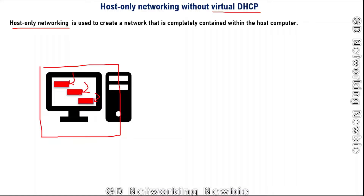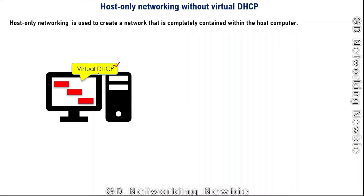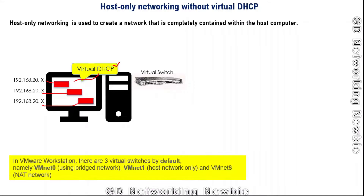We can have multiple virtual machines as part of a host-only network. These virtual machines can be assigned IP addresses using a virtual DHCP, which will dynamically assign IP addresses to all those virtual machines. In VMware, a virtual switch is used to connect all these virtual machines. By default in VMware Workstation there are three virtual switches: VMNET 0, VMNET 1, and VMNET 8. VMNET 1 is by default configured as a host-only network.